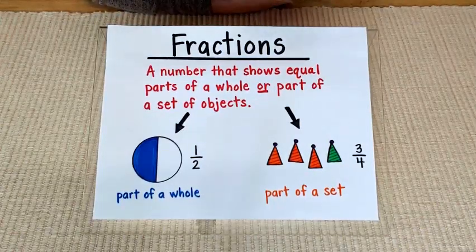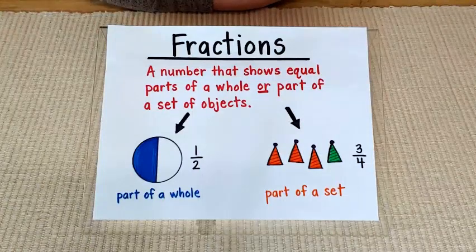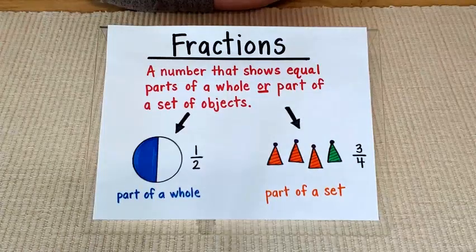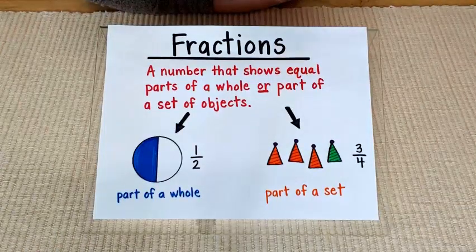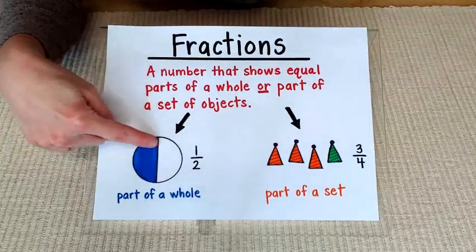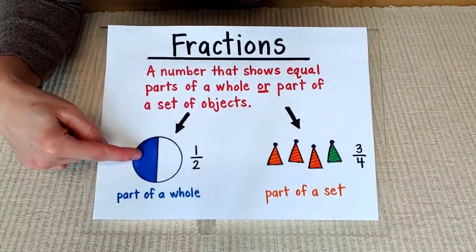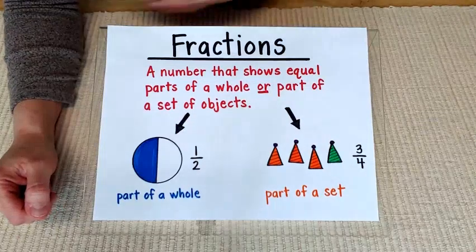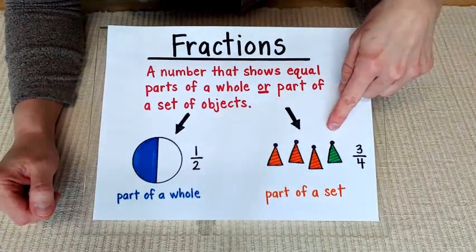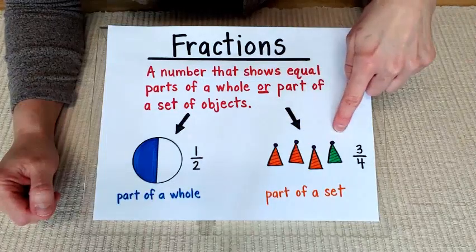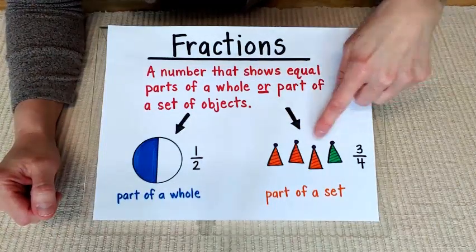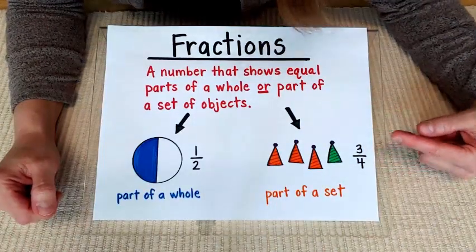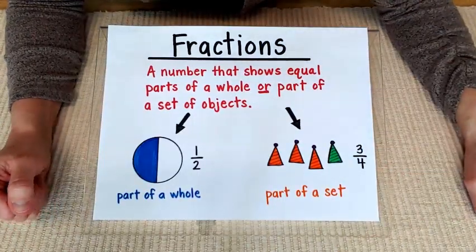Just a reminder, fractions are a number that shows equal parts of a whole or part of a set of objects. So for example, I have a whole circle and half of my circle is blue. One half is blue. Over here you can see I have my party hats. I have four party hats in my set, but three of them are orange. So three out of four, or three-fourths of my party hats, are orange.